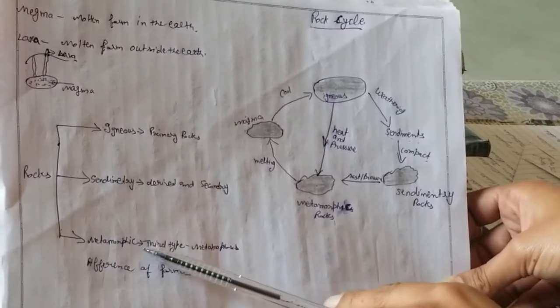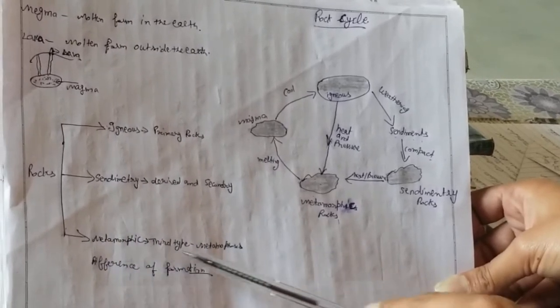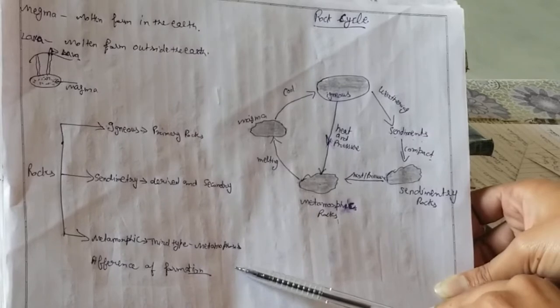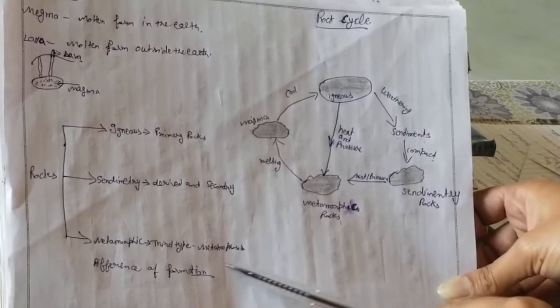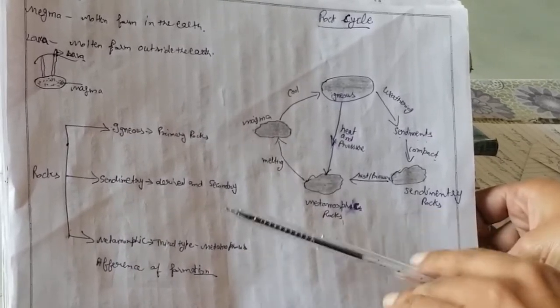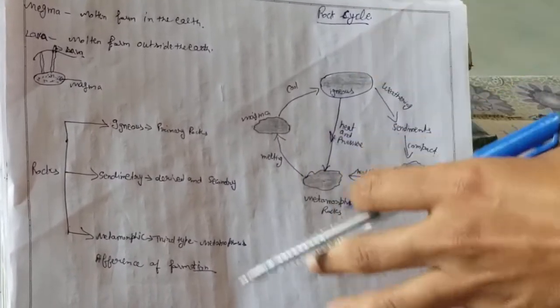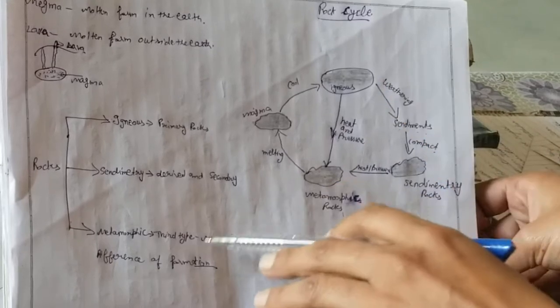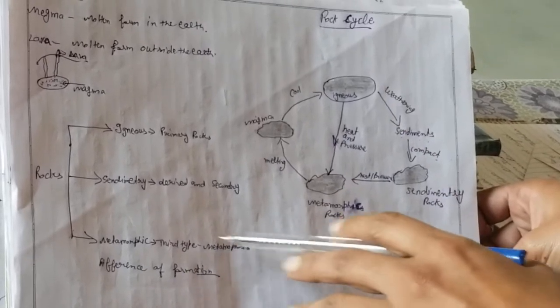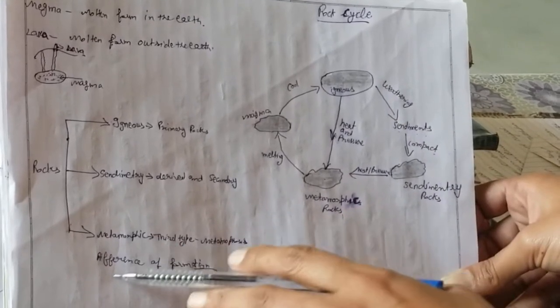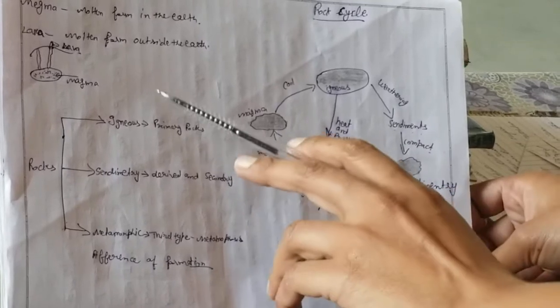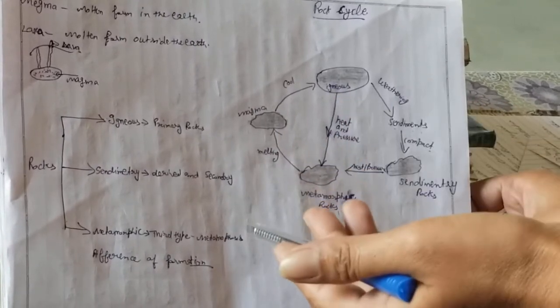The third type is metamorphic rocks. Metamorphic rocks are formed when rocks undergo heat and pressure, transforming them into metamorphic rocks. These are the three types of rocks.